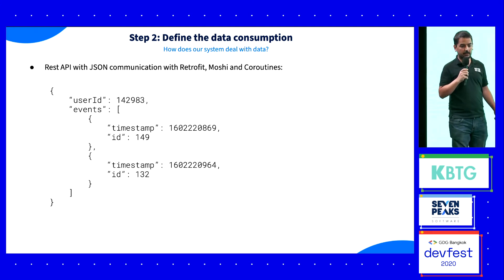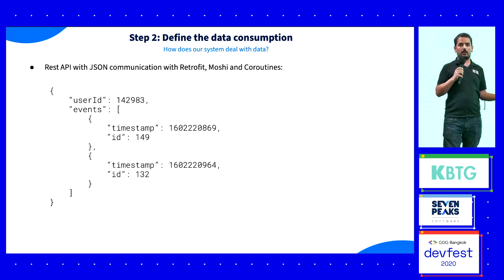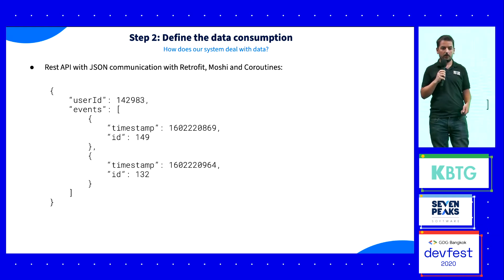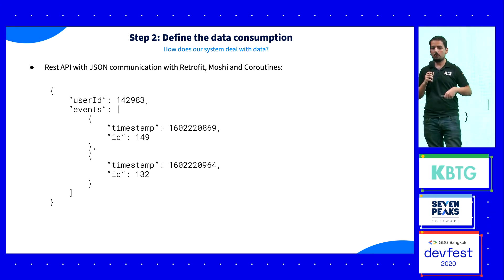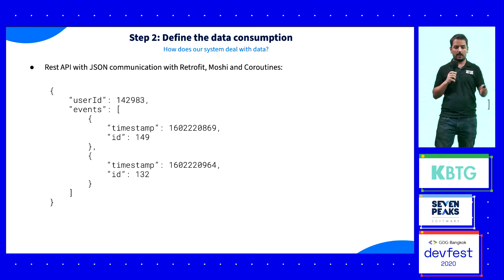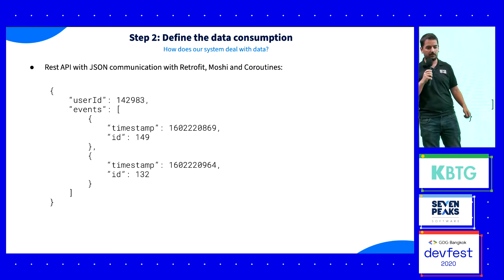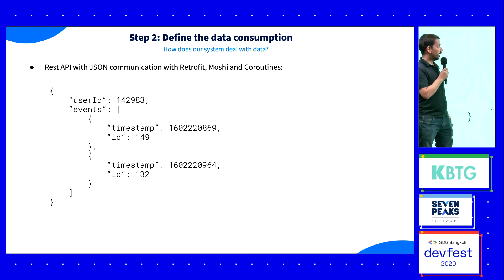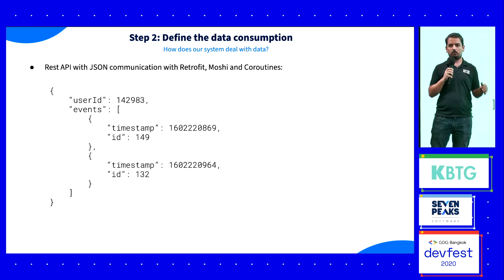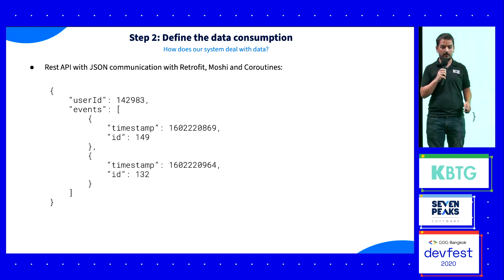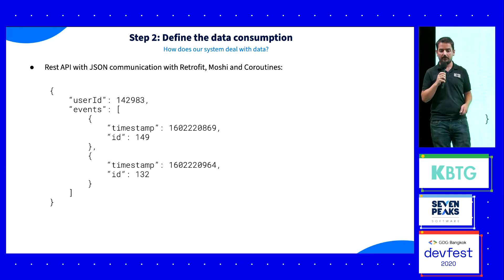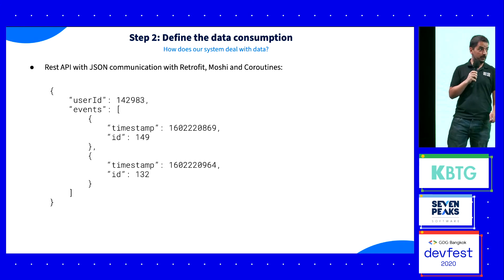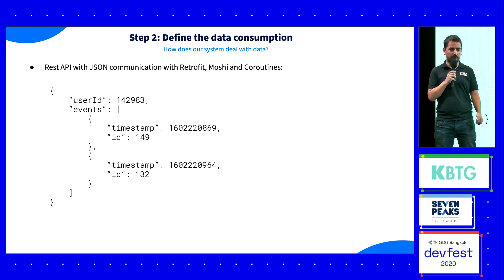When you want to do that, you have to think about the data. For many Android developers, the first instinct is a REST API with JSON communication — use Retrofit, Moshi, and Coroutines, then send a user ID and a list of events. This is actually the way most developers work, thinking about libraries first. But this is one of the worst approaches in this case, and we will see why.